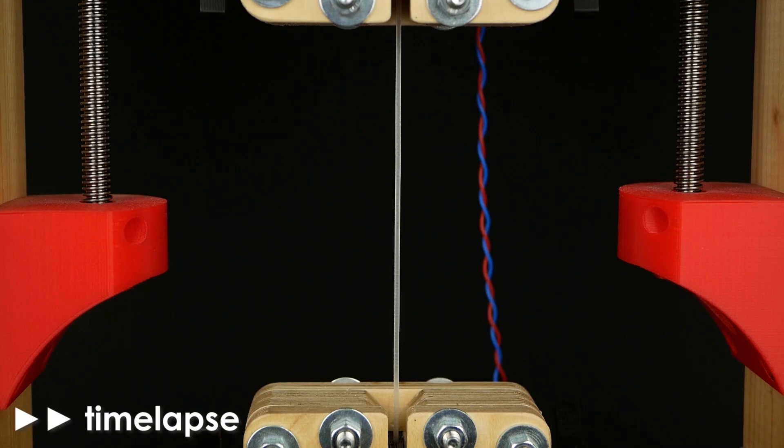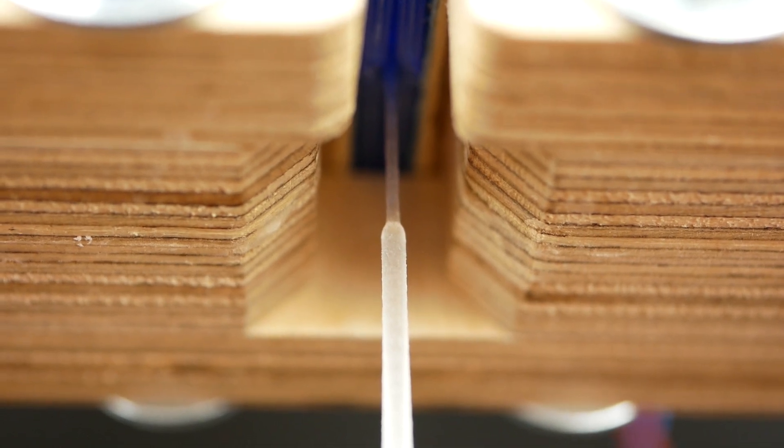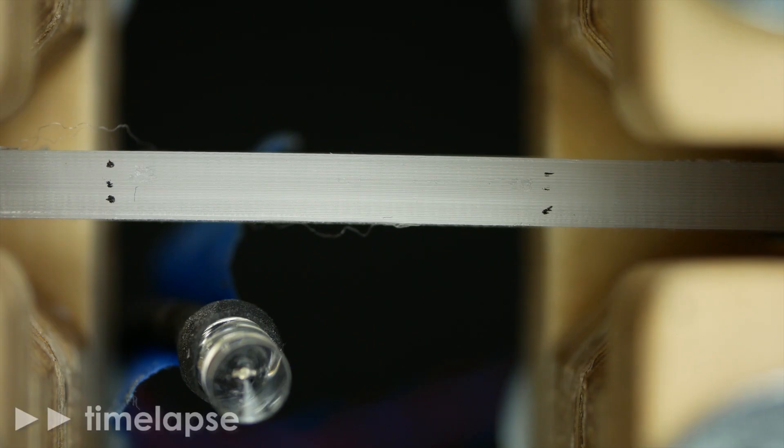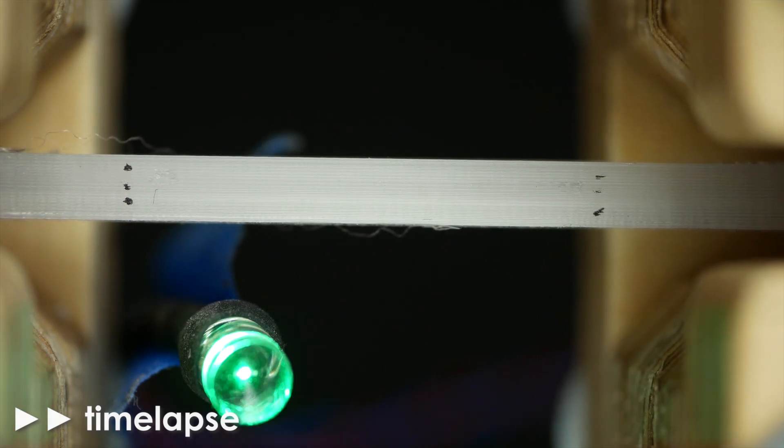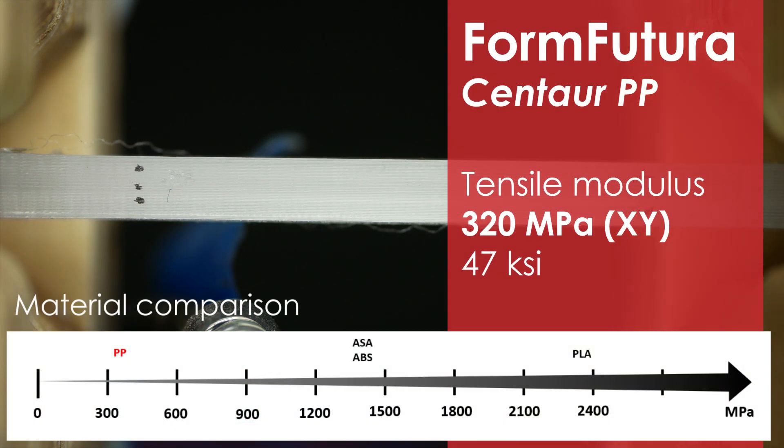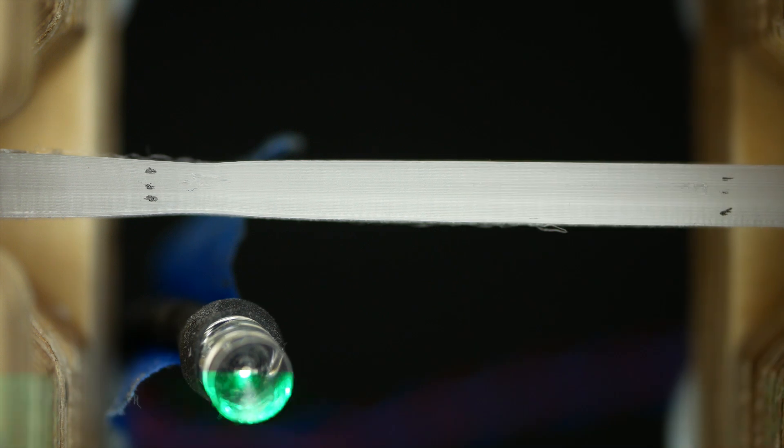The material properties weren't altered during the printing process because the tested filament behaved exactly the same. I have called polypropylene a semi-flex material in the beginning, which we can also see at the Young's modulus. With 320 MPa, it is around 7 times softer than PLA.